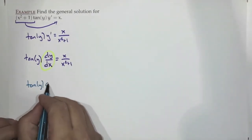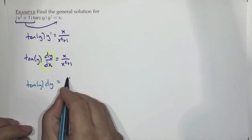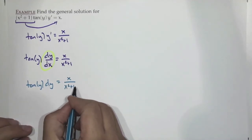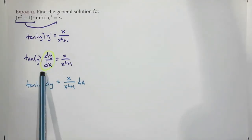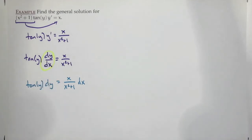So we write tan(y) dy = x/(x²+1) dx. This is a small abuse of notation, but one we're okay with. The reason it's an abuse of notation is that dy/dx is not two separate things — it's one whole thing. But we're treating it like two separate things, and that's okay.